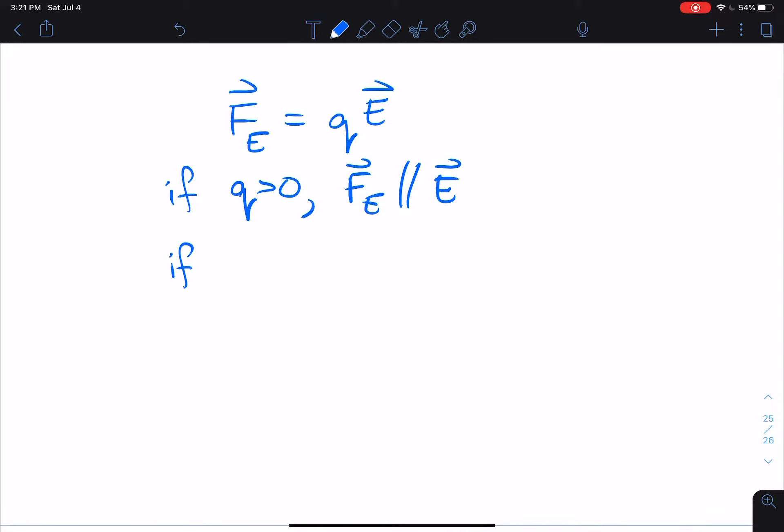But if q is negative, then the electrostatic force is antiparallel to the electric field. And just so we're clear, this symbol here means parallel, this means antiparallel.